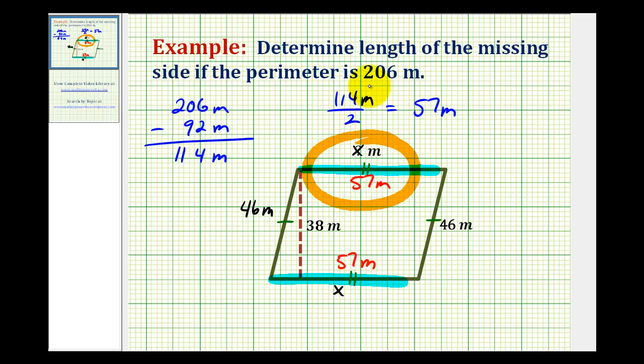And therefore knowing the perimeter is 206 meters, we could set up an equation that 2x + 2(46) = 206.